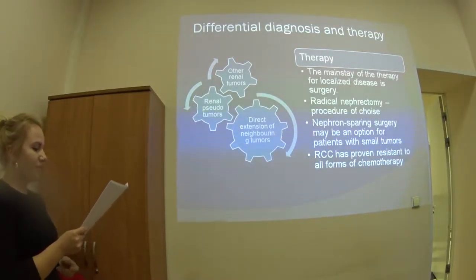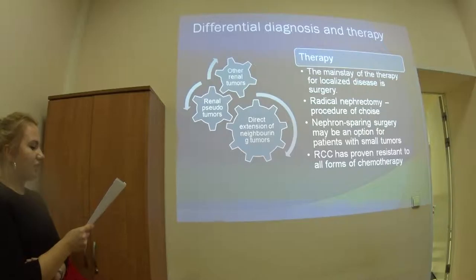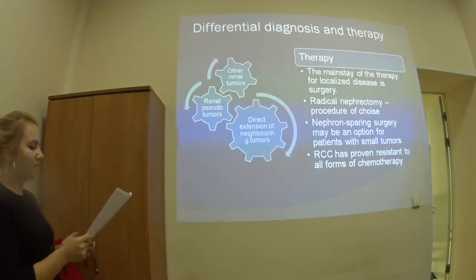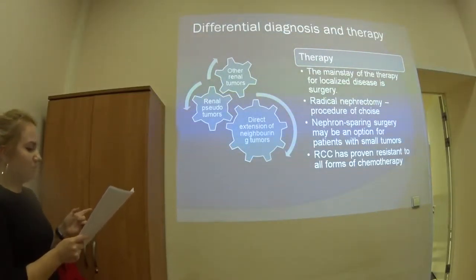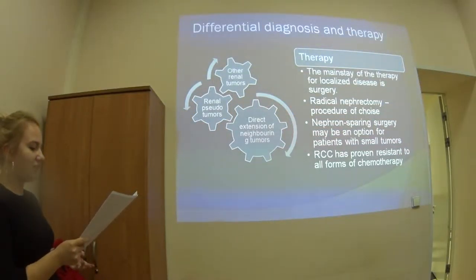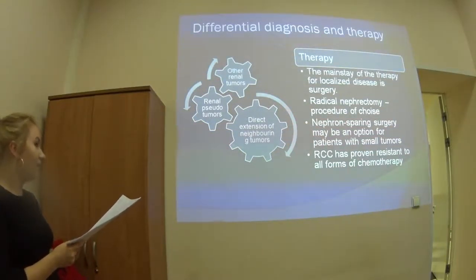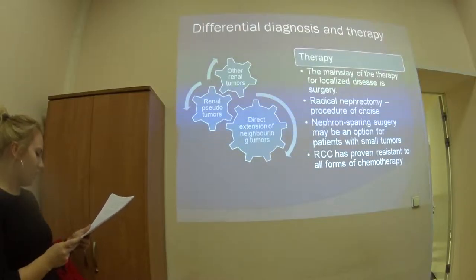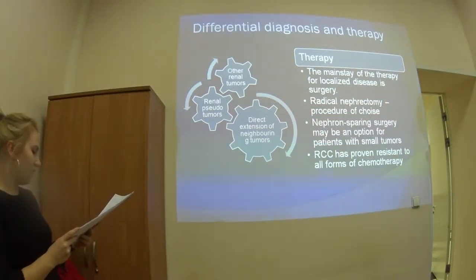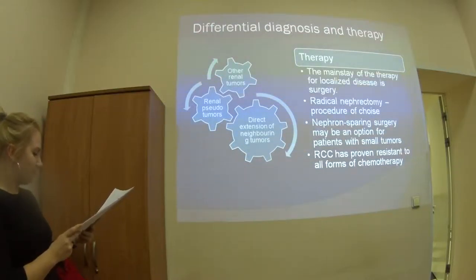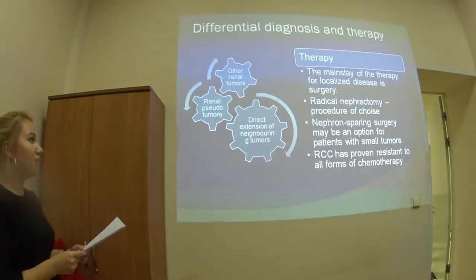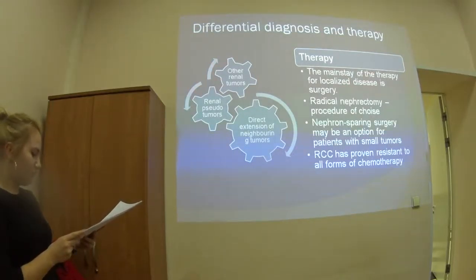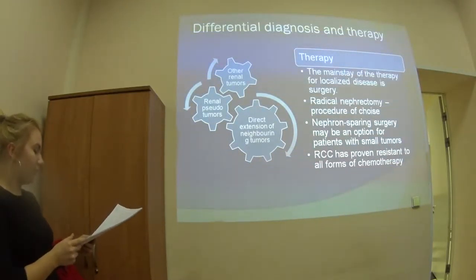Some words about differential diagnosis. The broad differential is essentially that of all renal masses, particularly other renal tumors, and most commonly includes renal adenoma, renal oncocytoma, renal lymphoma, and multilocular cystic nephroma. Renal pseudotumors such as hemorrhagic or complex renal cysts, renal abscess, renal infarct, or hypertrophic column of Bertin should also be considered, as well as direct extension from neighboring tumors: transitional cell carcinoma of the pelvis, adrenal tumors, or retroperitoneal tumors.